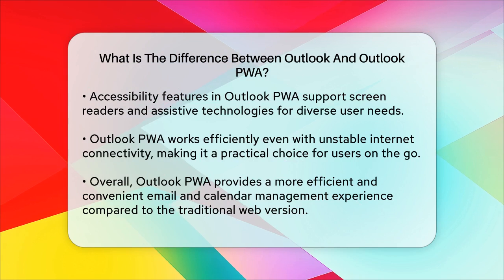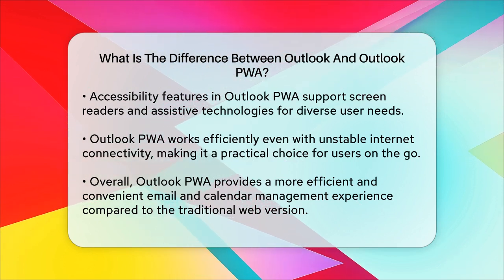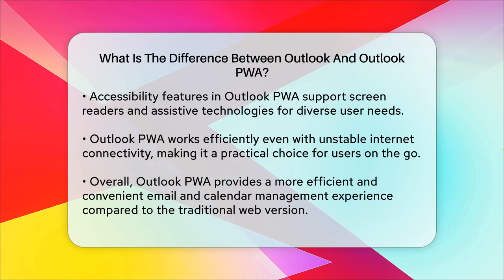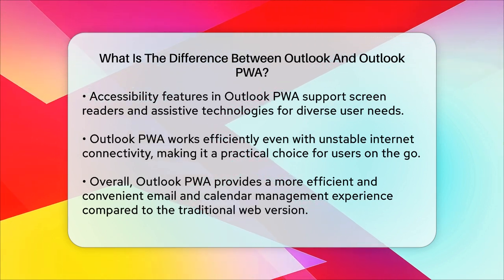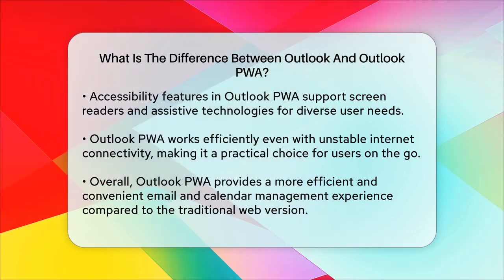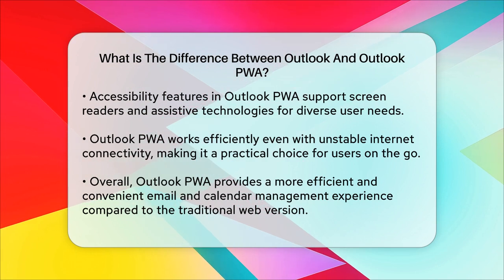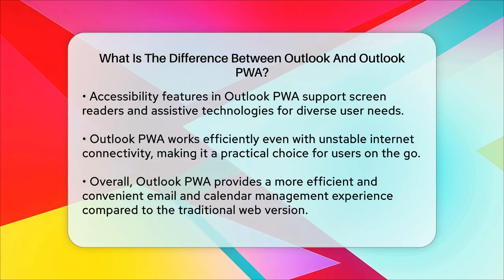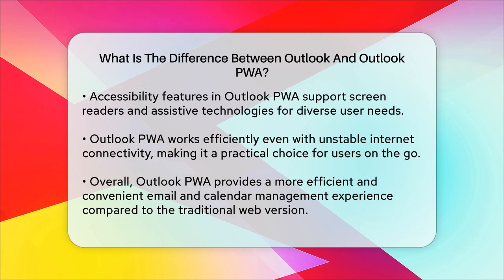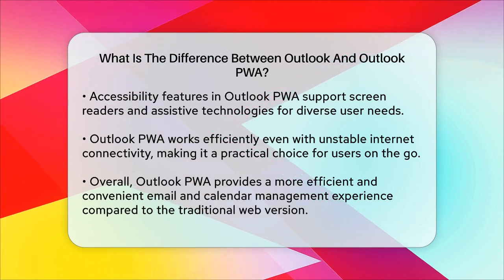In summary, Outlook PWA offers a more streamlined, efficient, and convenient way to manage your email and calendar. With features like offline access, push notifications, and a modern app-like interface, it's a significant upgrade from the traditional web version of Outlook. Whether you're a frequent traveler or someone who needs constant connectivity, Outlook PWA is designed to keep you productive and connected no matter where you are.